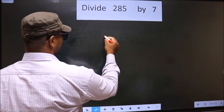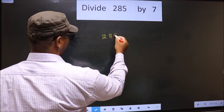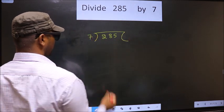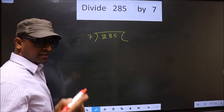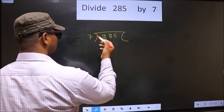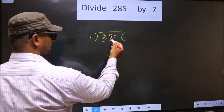That is 285. 7 here. Okay. Next. Now here we have 2, 2 smaller than 7. So we take 2 numbers, that is 28.